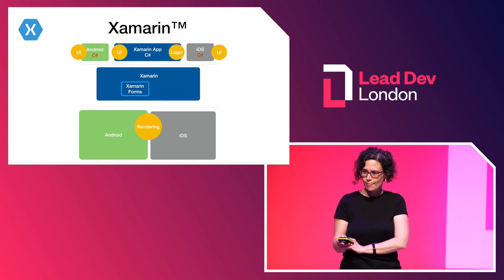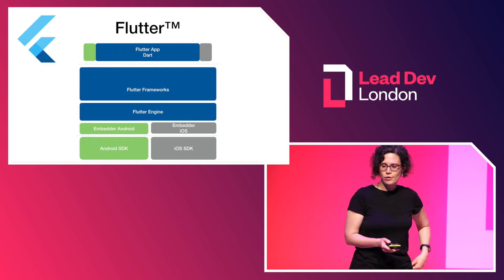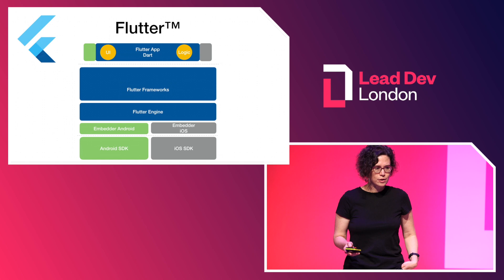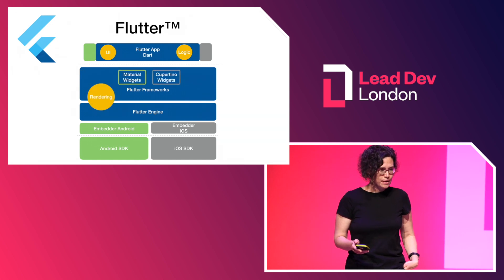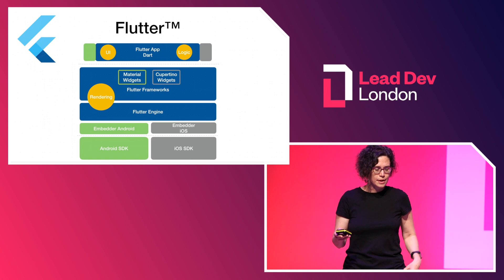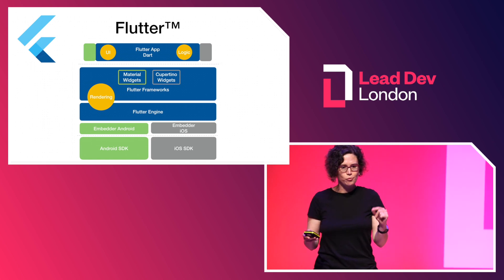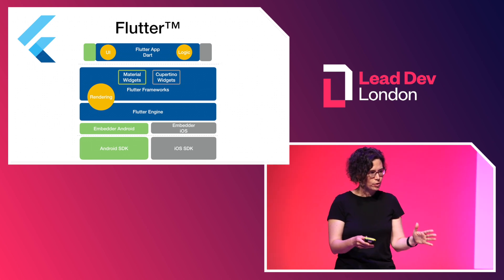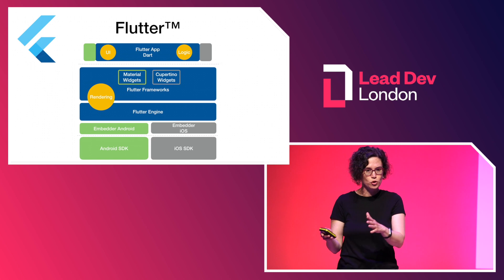Google introduced Flutter in 2017. Developers write their apps in Dart for both UI and logic, and all of this code is shared. Rendering is not done by the native systems but by the Flutter engine — you can think of it like a game engine doing all the rendering. This is made possible by a rewrite of UI components. Flutter comes with its own UI components: Material for Android and what they call Cupertino for iOS.